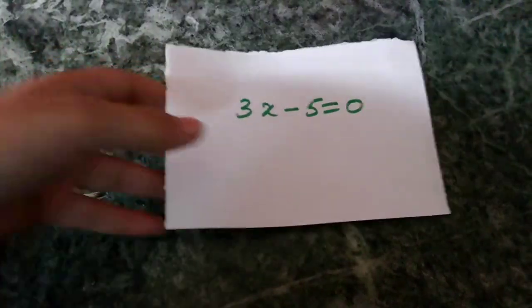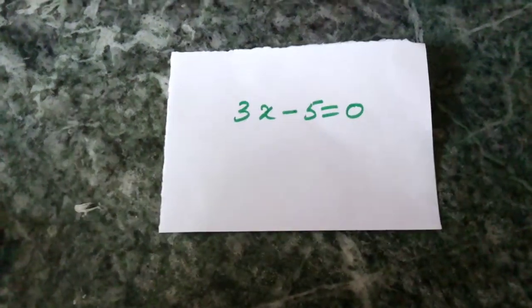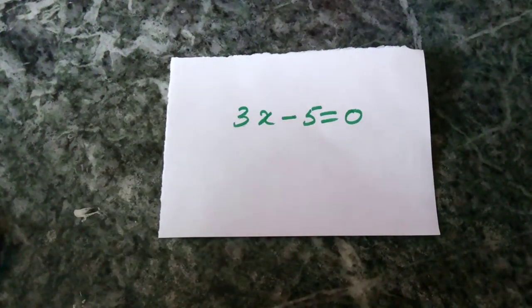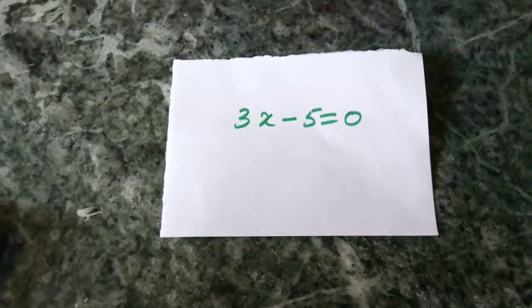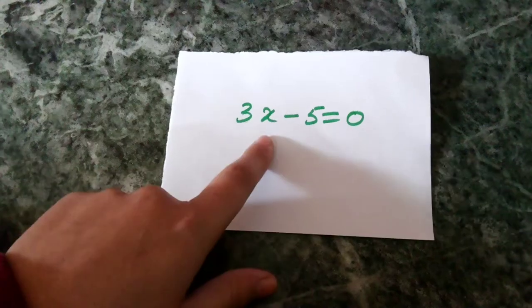Example 2: 3x minus 5 equals zero. It is not an example of a linear equation in two variables because there is only one variable, x.